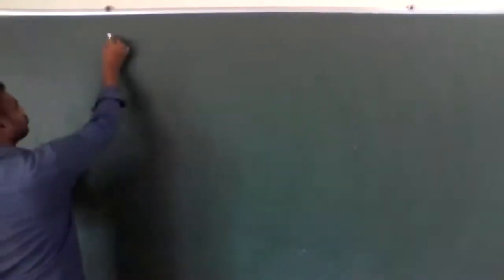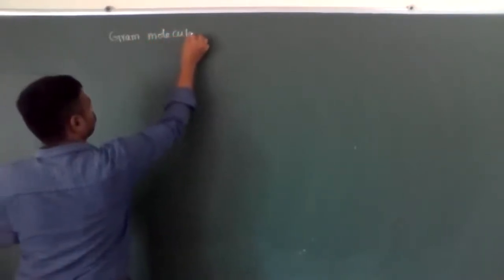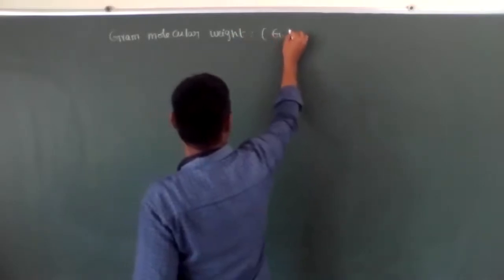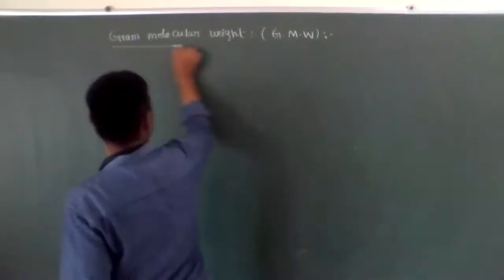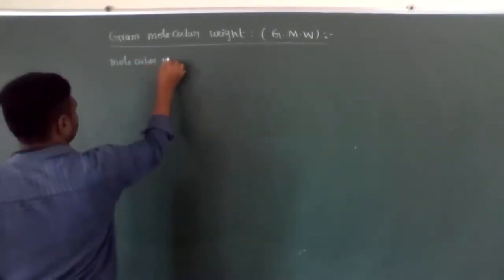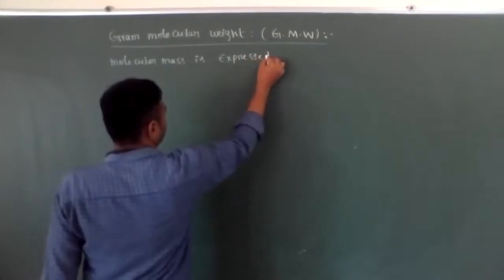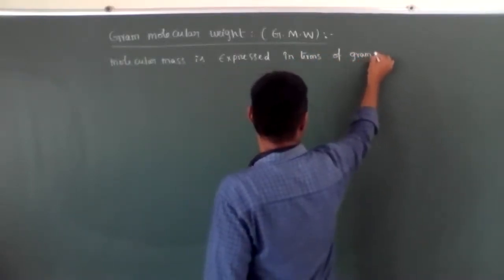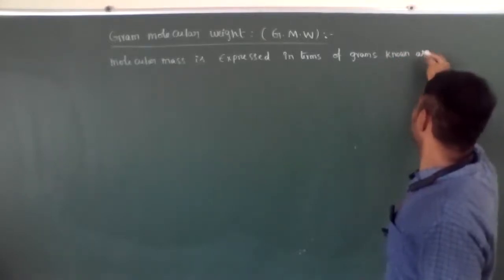Gram Molecular Weight — shortcut GMW. What is Gram Molecular Weight? When the molecular mass is expressed in terms of grams, it is known as Gram Molecular Weight.